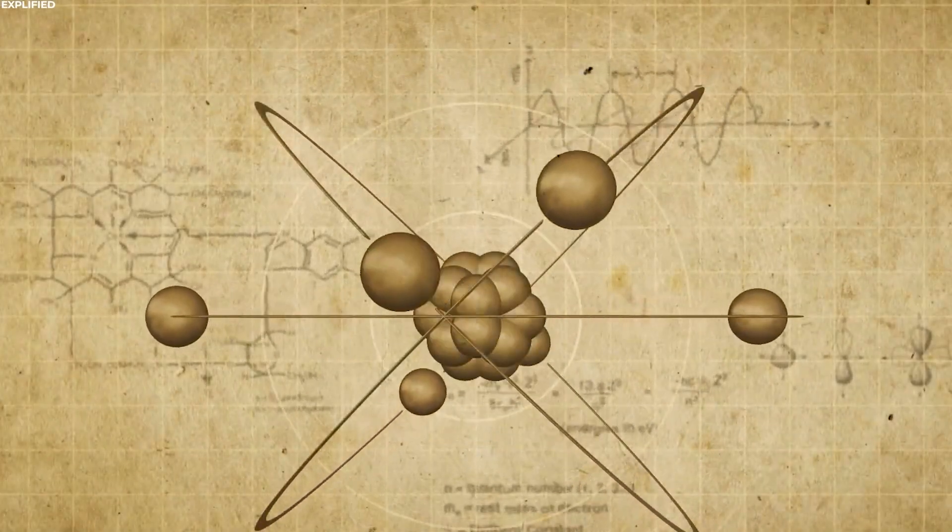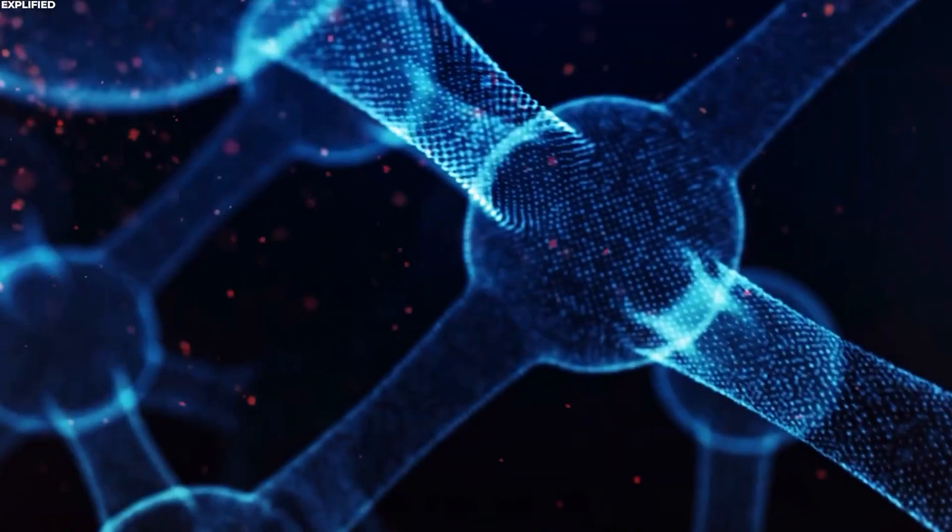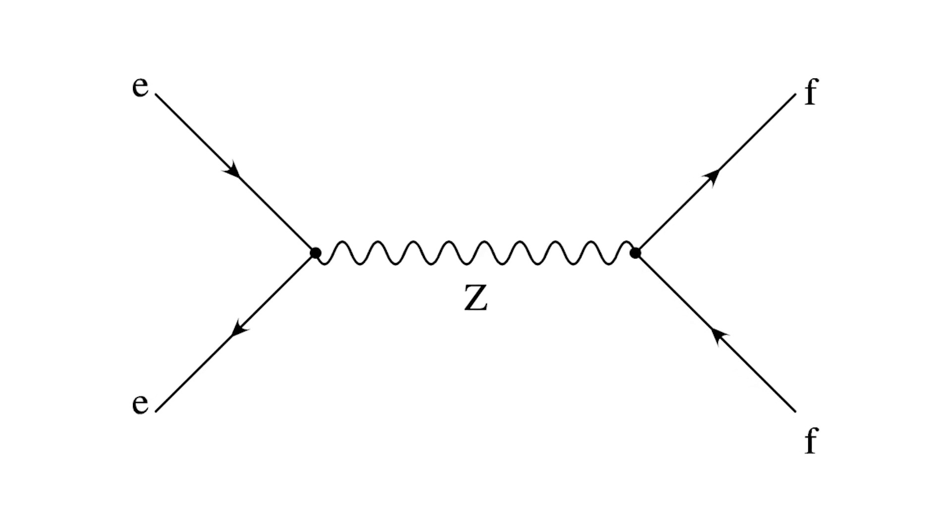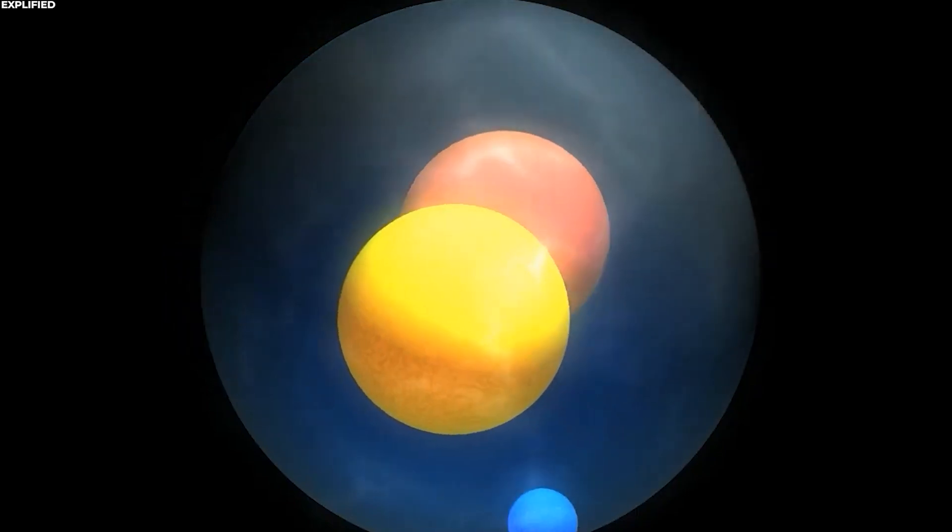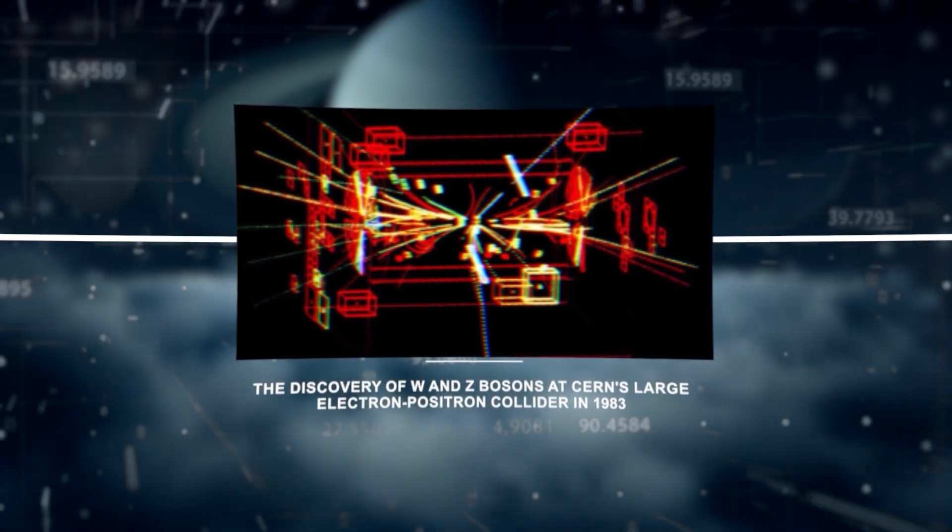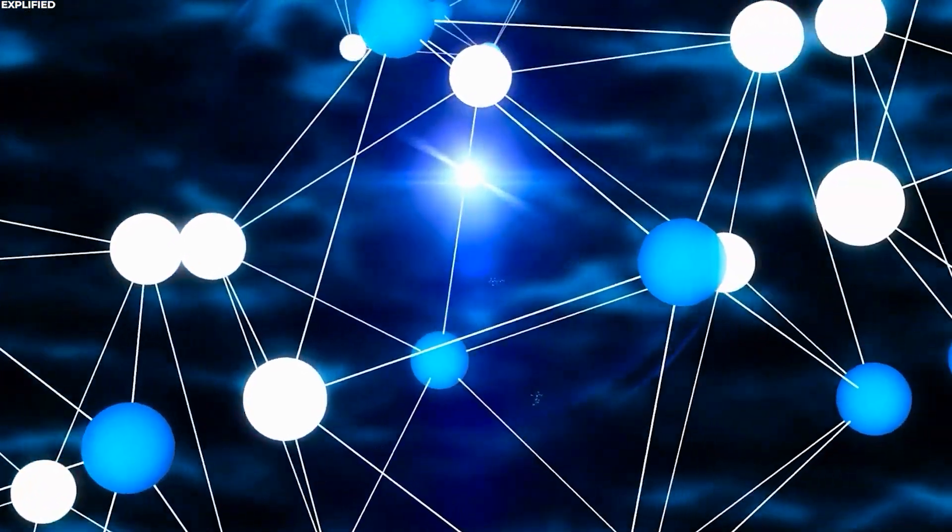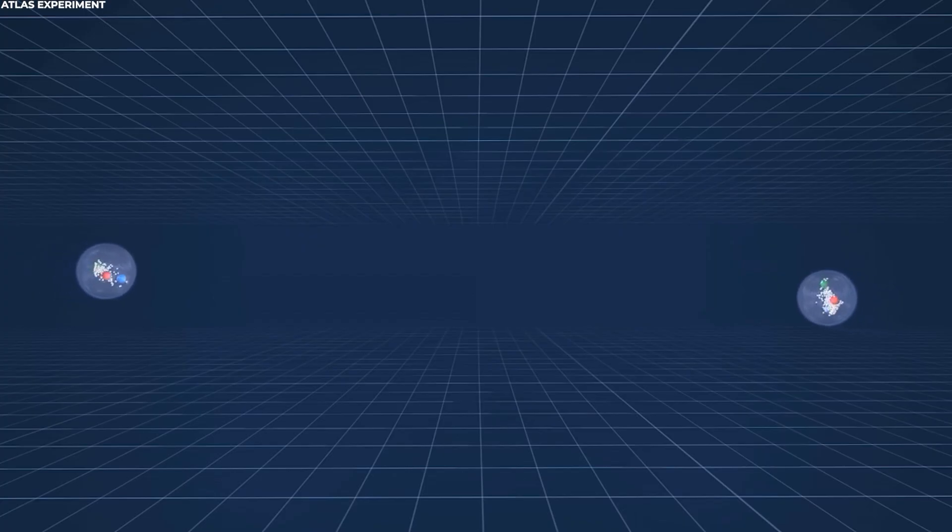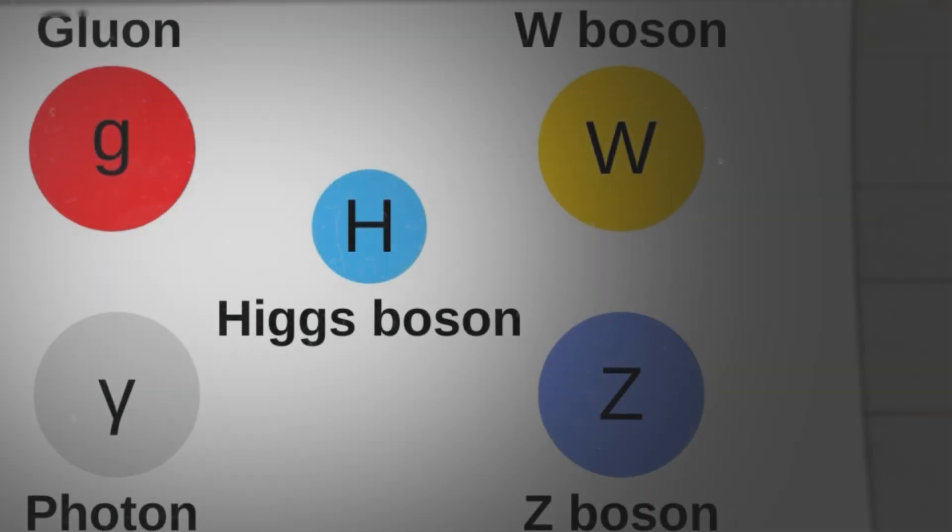W bosons are involved in the process of beta decay by mediating the conversion of a neutron into a proton, electron, and anti-neutrino. While Z bosons mediate interactions involving neutrinos, a type of weakly interacting particle. The discovery of W and Z bosons at CERN's Large Electron-Positron Collider in 1983 confirmed the existence of these particles, providing experimental evidence for the weak nuclear force and supporting the electroweak theory. Understanding the weak nuclear force and its carriers, the W and Z bosons, is crucial for explaining certain fundamental processes in particle physics and sheds light on the behavior of matter at the smallest scales.